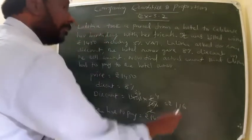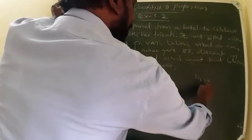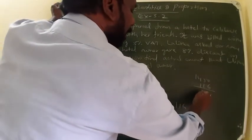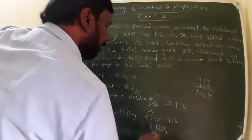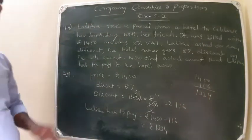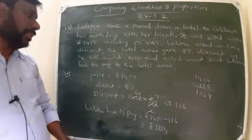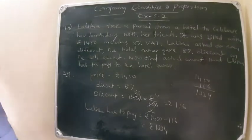That is Rs. 1450 minus Rs. 116. Subtract: 4, 3, 3, 1. So Rs. 1334. She has to pay Rs. 1334 to the hotel owner.